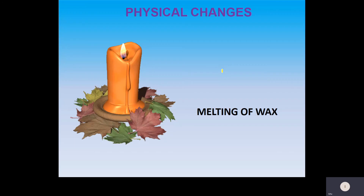You can see in front of you a burning candle. If you observe this, you can see the melting of the wax, and melting of wax is a physical change. As the wax melts, the height of the candle becomes short — there is a change in the height. That is the reason this change is considered a physical change. This is a simple example of physical change.